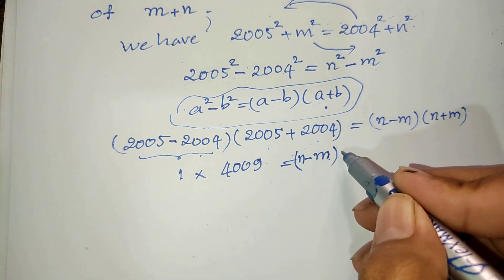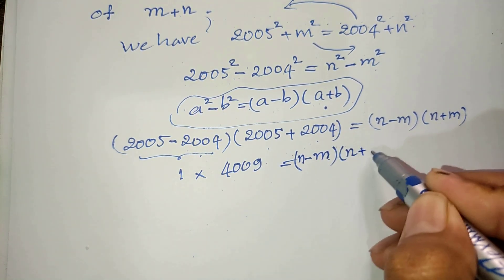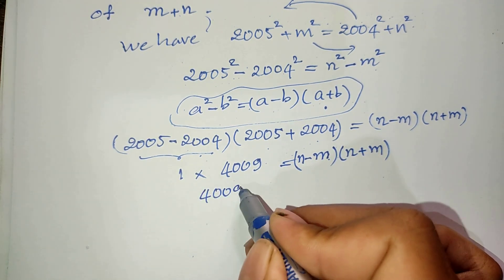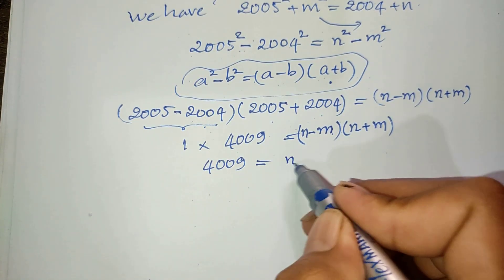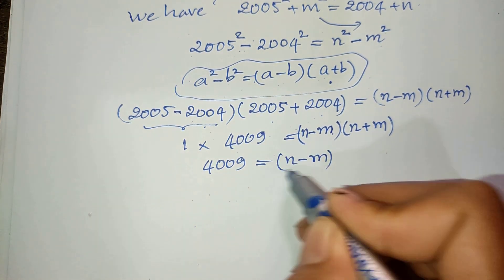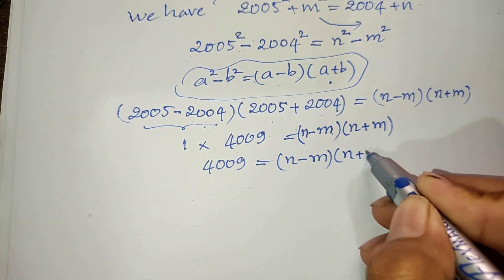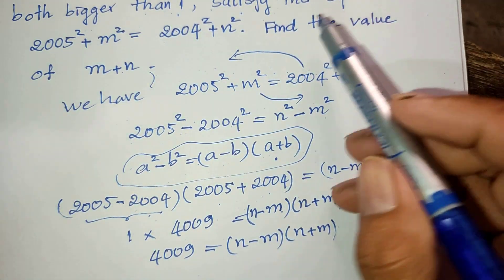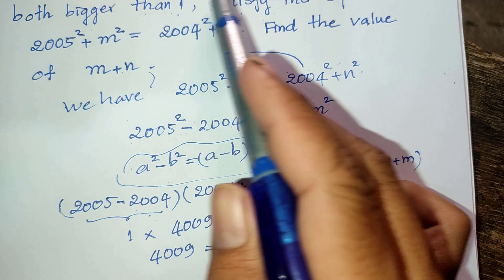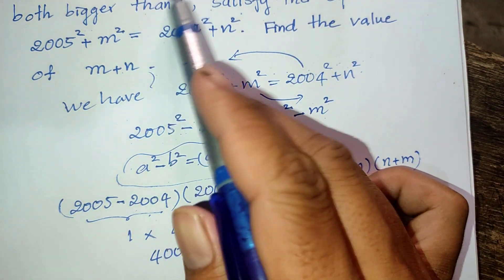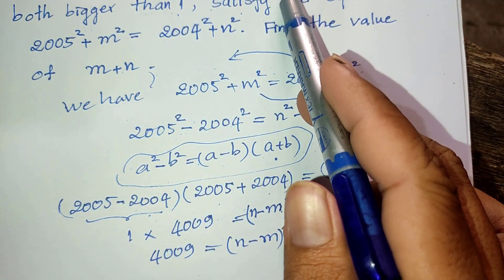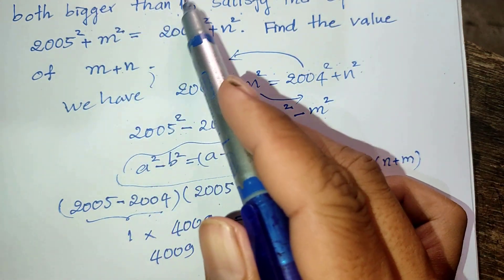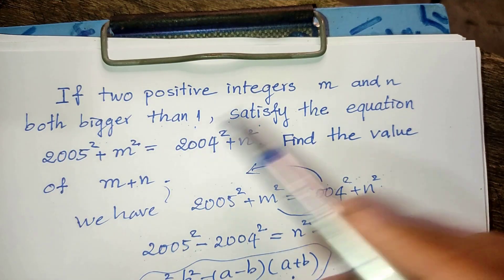Now this simplifies to: 4·cos(9°) equals (n minus m) multiplied by (n plus m). We know that m and n are positive integers and both bigger than one.